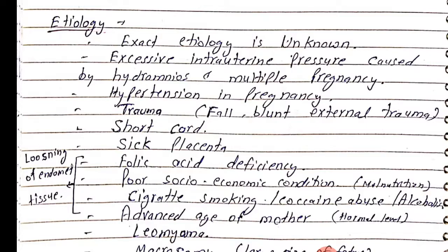Folic acid deficiency can also cause abruptio placenta, as folic acid is needed for DNA formation; poor folic acid leads to decreased endometrial growth. Poor socioeconomic conditions, malnutrition, cigarette smoking — cigarette smoking reduces circulation, which decreases endometrial blood supply leading to placental detachment.